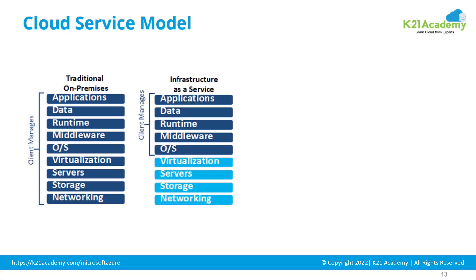The first service model is Infrastructure as a Service. In IaaS, networking, storage, servers, and the virtualization layer are managed by your cloud vendor. Virtualization gives you an option to create virtual machines — where you have one big physical server, you create multiple small virtual machines running on top of it. The underlying virtualization is managed by the cloud vendor. But anything above that — operating system, middleware, runtime, data, and application — is managed by you as the customer.